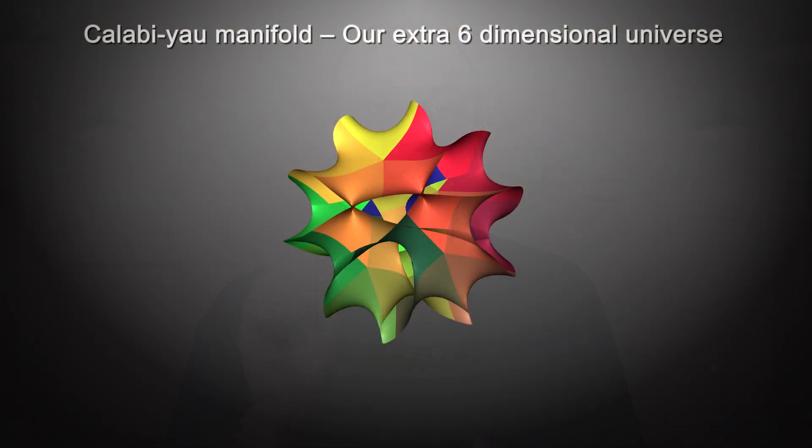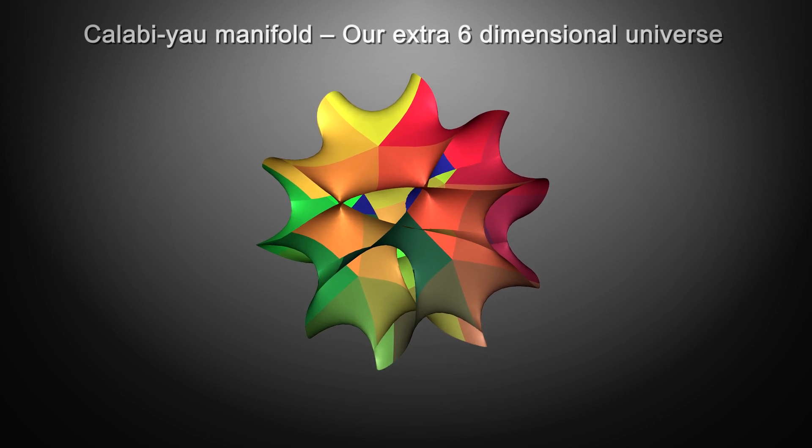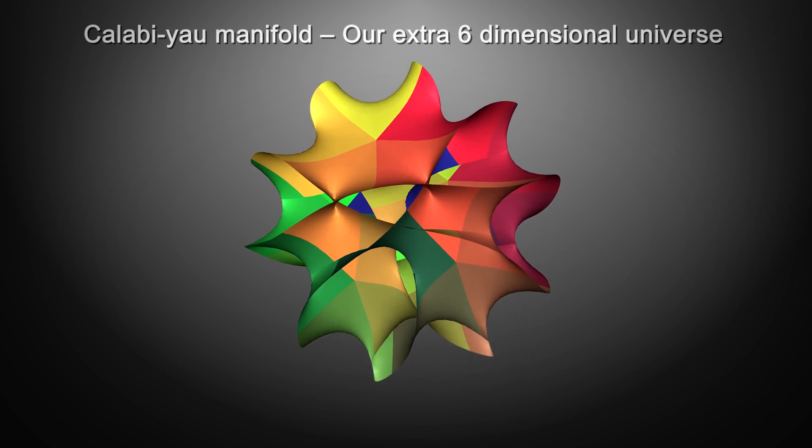We happen to be living in a universe where the shapes of the extra dimensions are such that the universe that we observe happens to exist. And here is a 2D representation of what our 6D universe would look like. It is called a Calabi-Yau manifold. You can learn more about this strange shape in the link in the description.